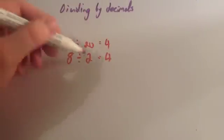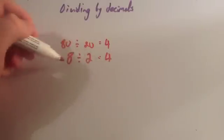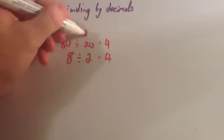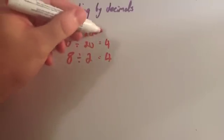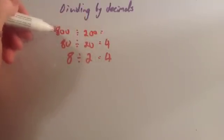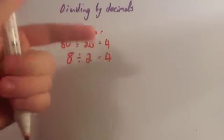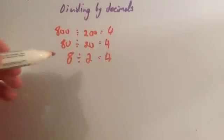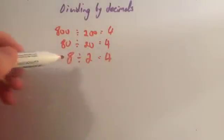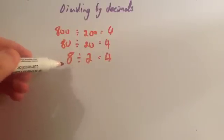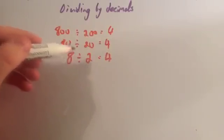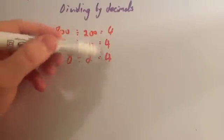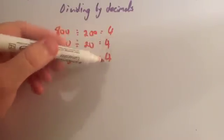Now I'm going to go back to my original. I'm going to times both of these numbers by 100. So 800 divided by 200. How many 200s go into 800? 200, 400, 600, 800 — again the answer is 4. Now do you notice: as I multiply both numbers — both the number you're dividing and the number you're dividing by — by 10, 100, or any number in fact, the answer will always be the same.